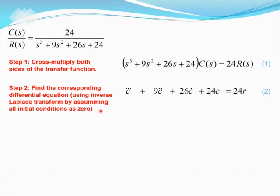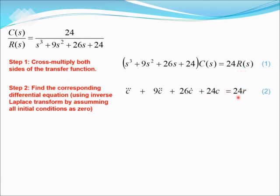Taking the inverse Laplace transform: s³ gives us c triple prime, 9s² gives us 9c double prime, 26s gives us 26c prime, and 24 gives us 24c, and 24r gives us 24r, which forms equation number 2.